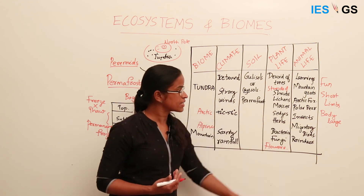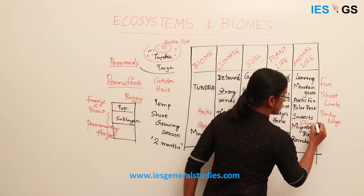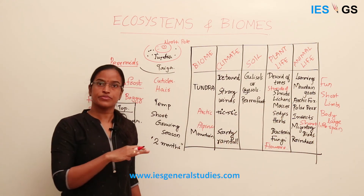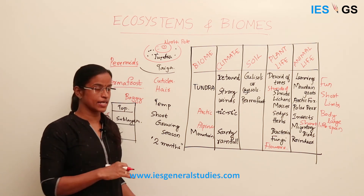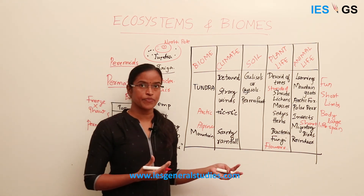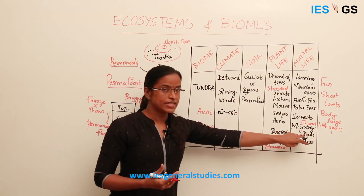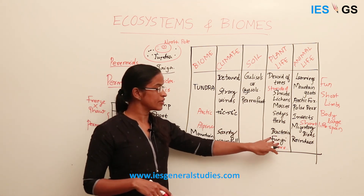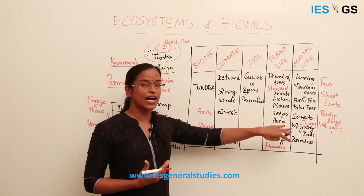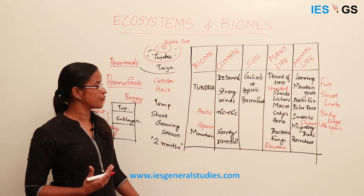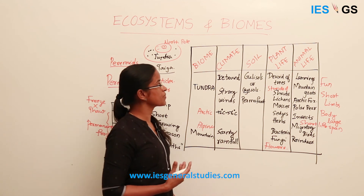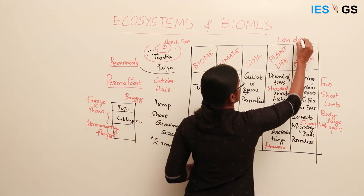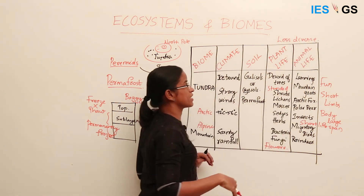Insects also have a short lifespan, similar to perennial plants — they exist only for a particular month in a year, after which they die. Some migratory birds also visit this region. One important point is that bacteria and fungi diversity is relatively higher here, with different varieties of these microorganisms. However, plant and animal life are less diverse — there is not much variety of plants and animals available.